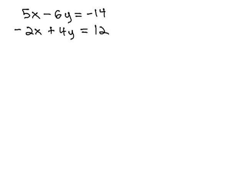However, in this problem, we have 5x minus 6y equals negative 14, and negative 2x plus 4y equals 12. There's no variable that seems relatively easy to get alone.